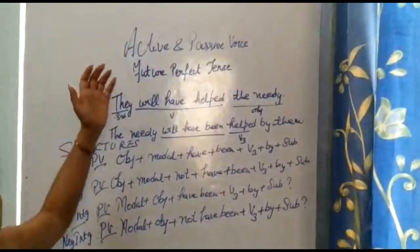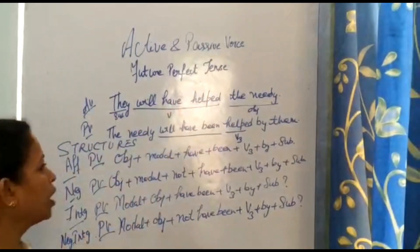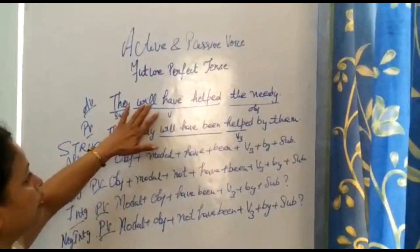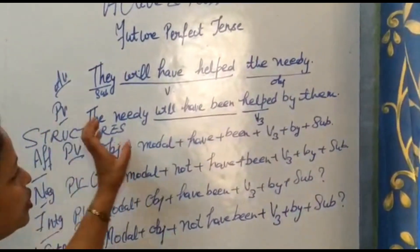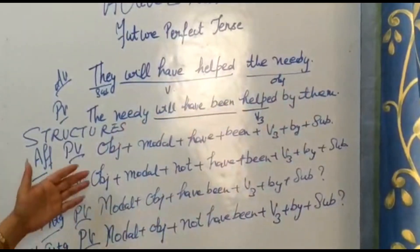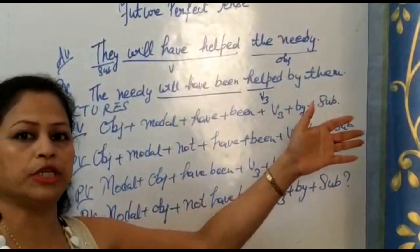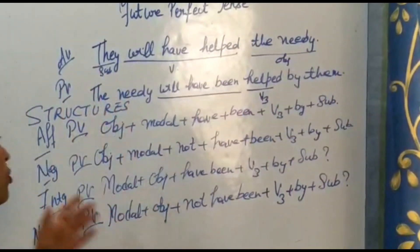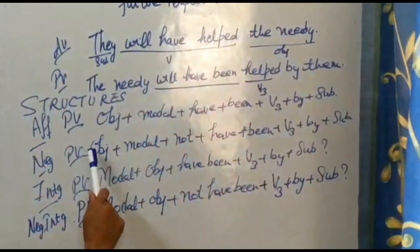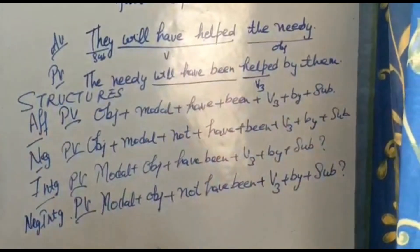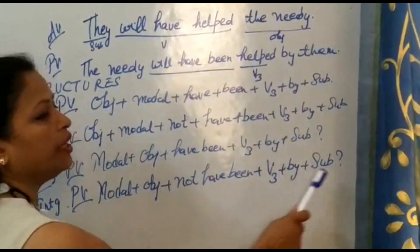Having a quick revision — future perfect tense active voice structure is: subject + will have + V3 + object. Passive voice: the needy will have been helped by them. Affirmative structure: object + modal + have been + V3 + by + subject. Reading the same sentence in all forms: 'The needy will have been helped by them.' 'The needy will not have been helped by them.' 'Will the needy have been helped by them?' 'Will the needy not have been helped by them?'